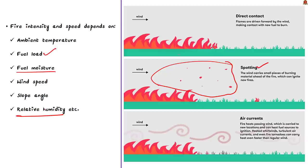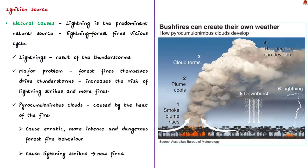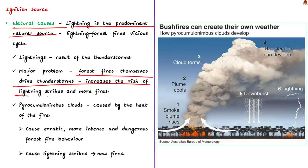Forest fires can originate from both human activity and natural causes. Under natural cause, lightning is the predominant one and these lightning could be a result of thunderstorms. There is a major problem with the combination of thunderstorms and forest fires because they form a vicious circle. Forest fires themselves can also drive thunderstorms, increasing the risk of lightning strikes and more fires.